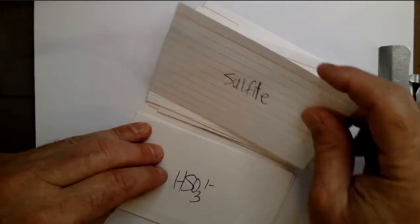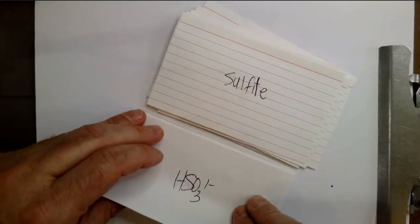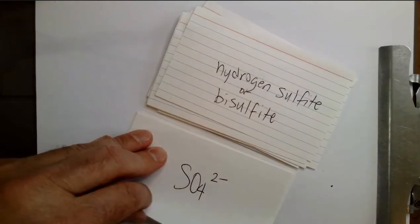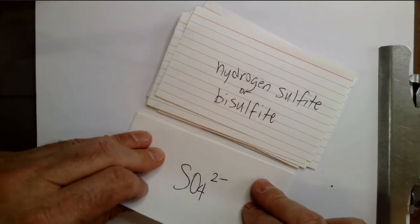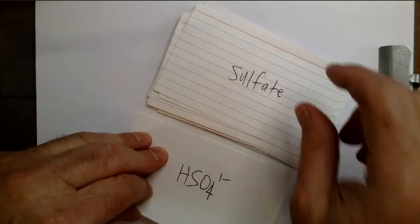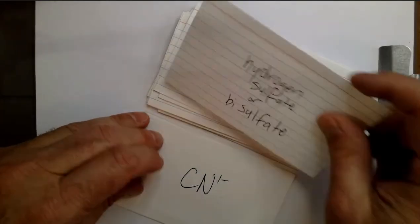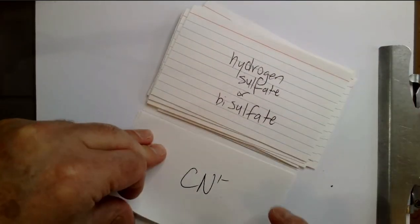SO3 2- sulfite. HSO3 1- hydrogen sulfite or bisulfite. SO4 2- sulfate. HSO4 1- hydrogen sulfate or bisulfate.